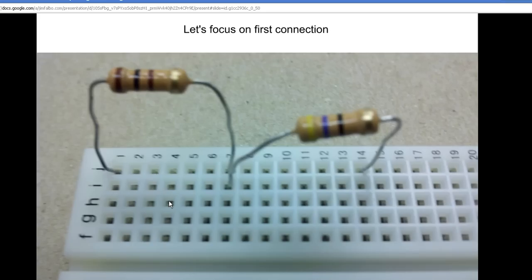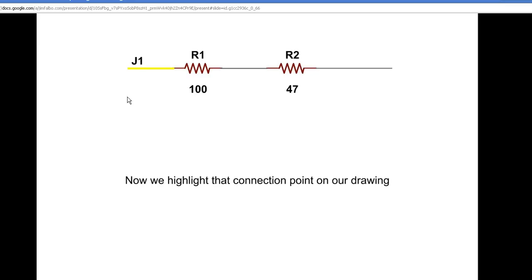We're going to connect our first resistors, R1 and R2, and we're going to highlight each connection in our drawing as we make each one. You connect one leg of R1 to, in this example, point J1, and in the drawing we would highlight that part of our resistor.